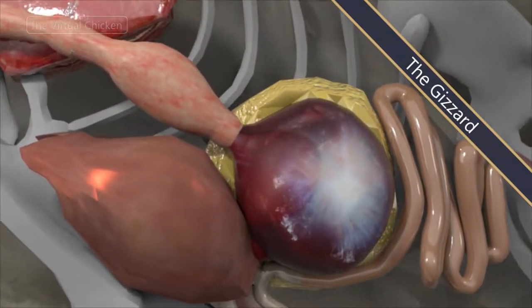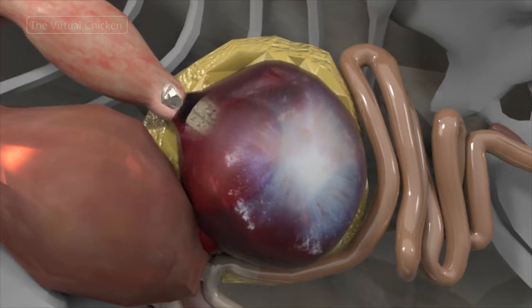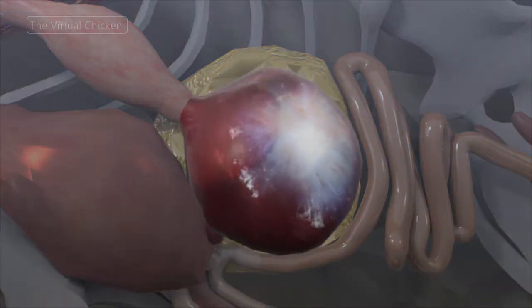The gizzard, or ventriculus, is the muscular stomach where the grinding of food takes place. After being softened by the proventriculus, food moves into the gizzard.